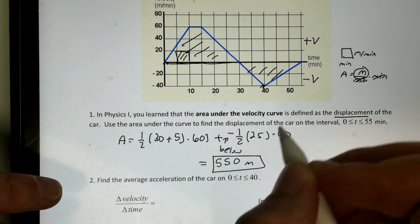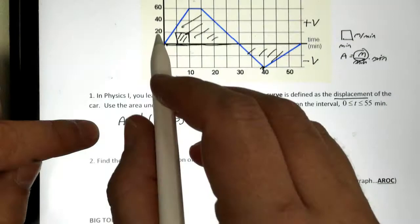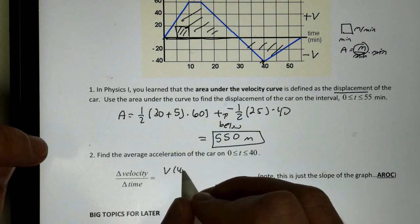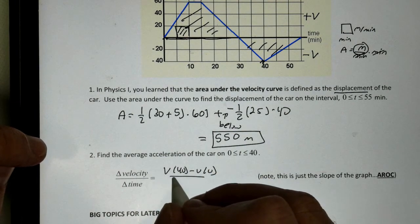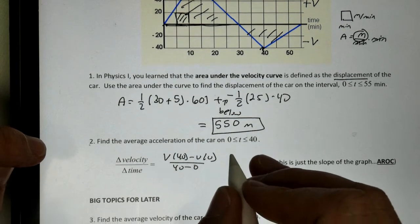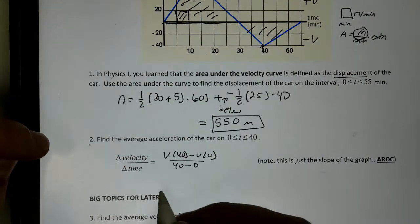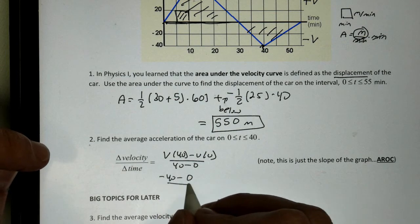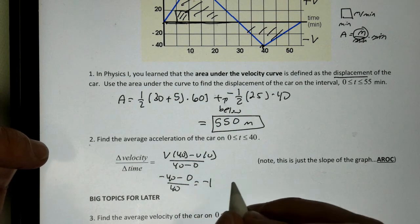This is my velocity graph. So it's going to be V of 40 minus V of 0 over 40 minus 0. And that's going to give me negative 40 minus V of 0, just 0, all over 40. And I get negative 1.